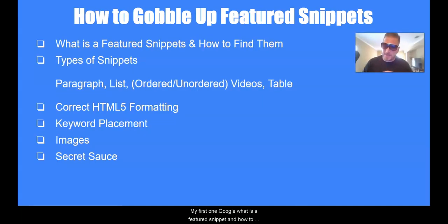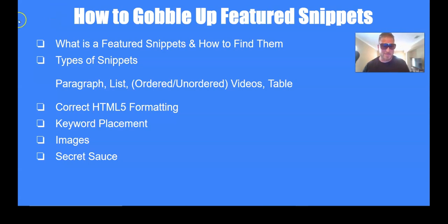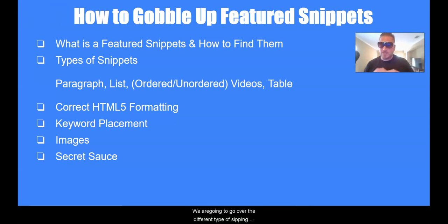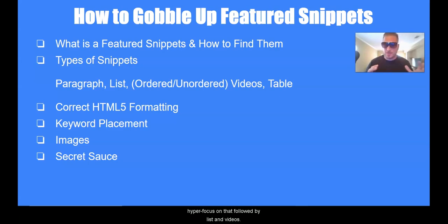First we're going to go over what a featured snippet is and how to find them. If you don't know what a featured snippet is, go check out Chris's channel and come back. Next, we'll go over the different types: paragraph, list, ordered, unordered, videos, and tables. In this video we're primarily going to cover paragraph, list, and videos — almost half of all featured snippets are paragraphs, so we'll hyper-focus on that.